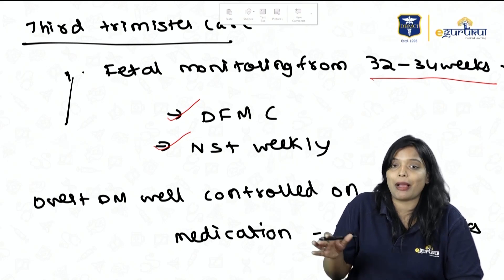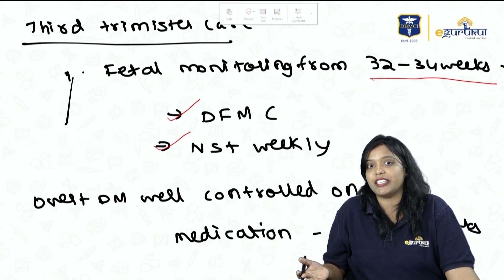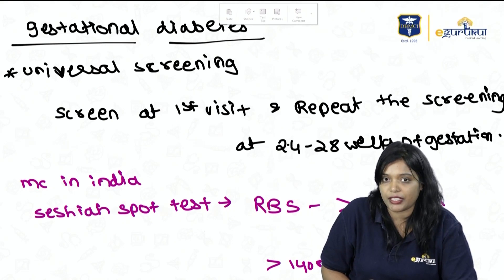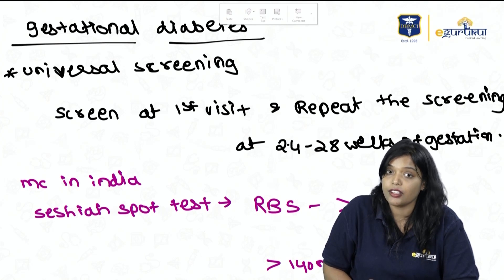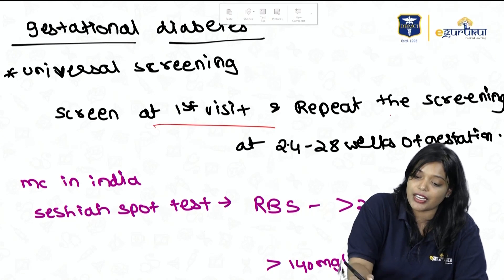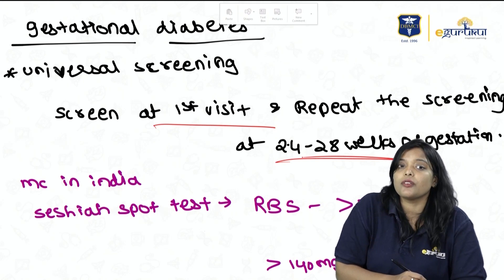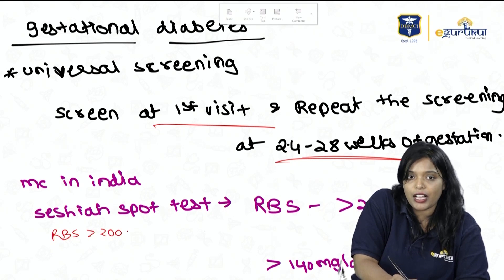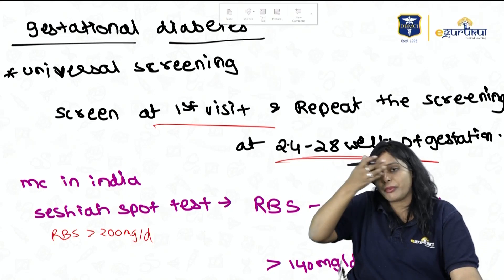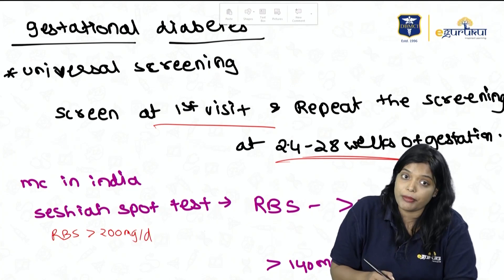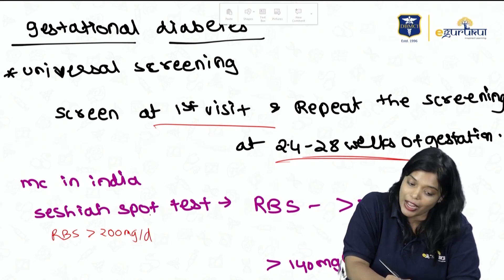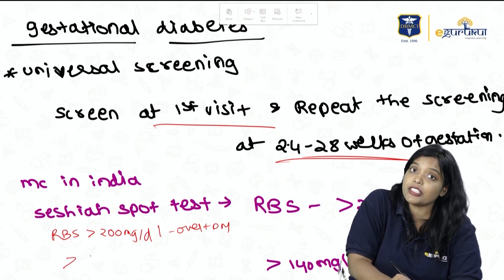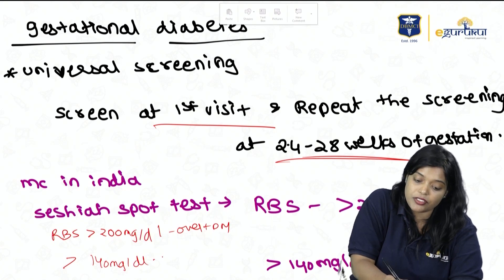Now coming to gestational diabetes mellitus (GDM): it is glucose intolerance for the first time in pregnancy, and universal screening is required. Screen at the first visit and repeat between 24–28 weeks. The most commonly used test in India is the Sheshaya spot test — if RBS is more than 200 mg/dL it is Overt DM, and if more than 140 mg/dL it is GDM.